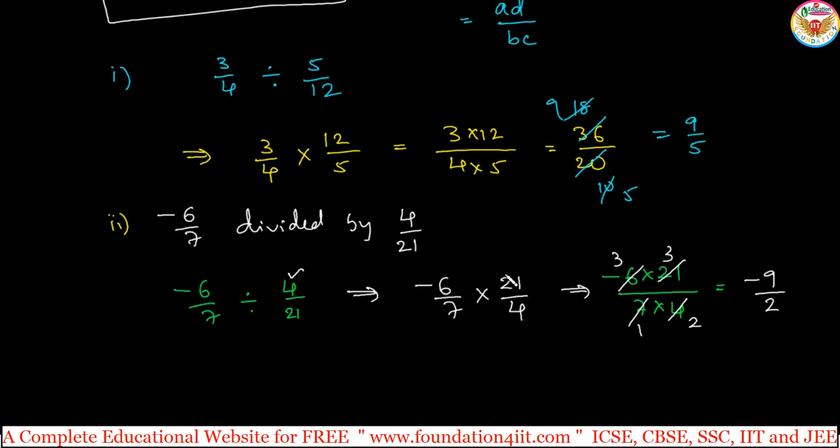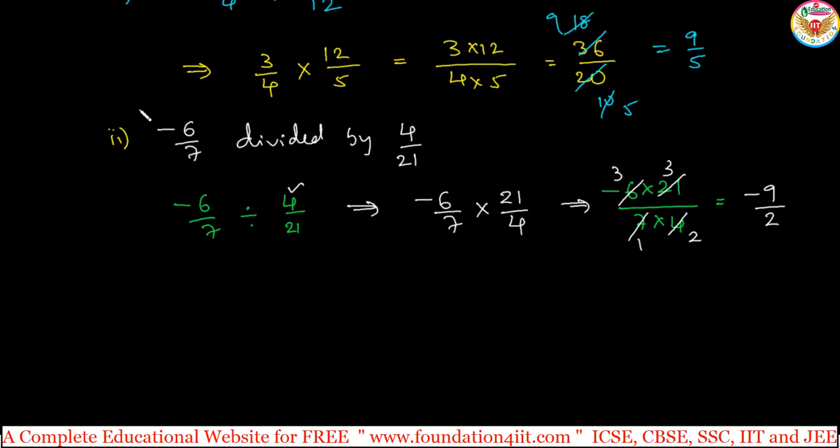Let us have one more example with negative sign. Same thing you need to apply. This is the division of two rational numbers right away. For example, minus 16 by 27 divided by minus 8 by 9.